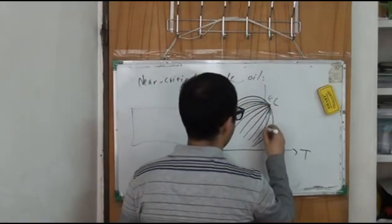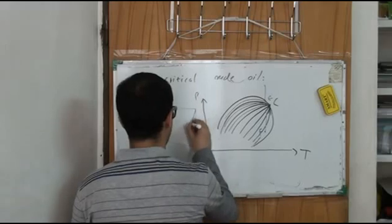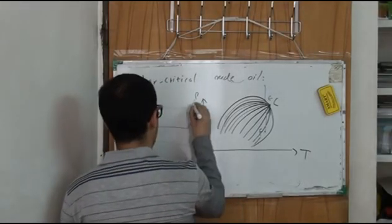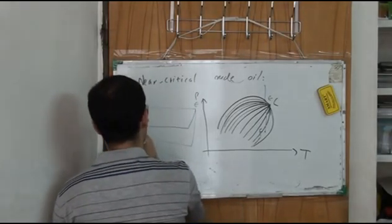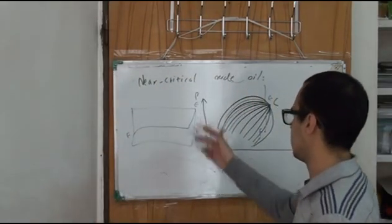If this is point E and this is point F, for example, it might be something like this. As you can see, there is so much oil shrinkage in this diagram.